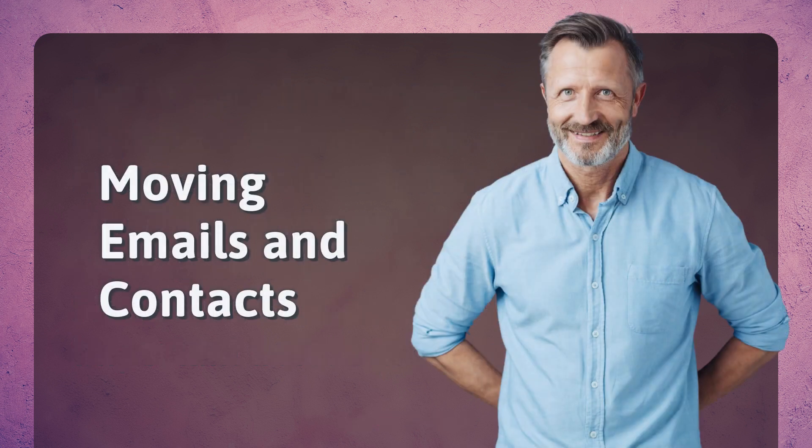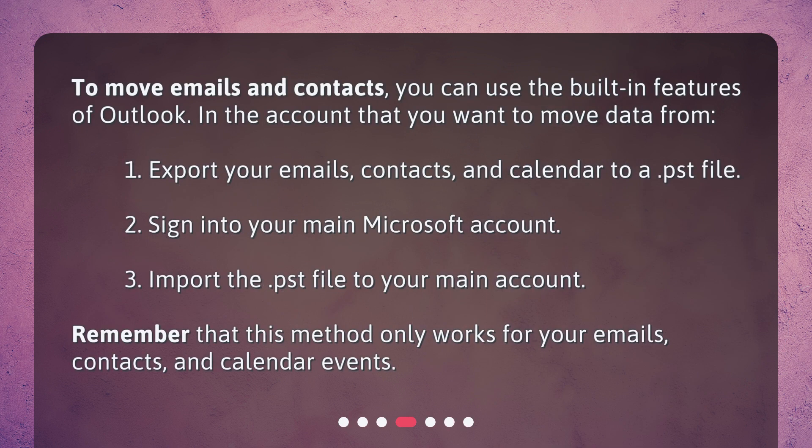Moving Emails and Contacts. To move emails and contacts, you can use the built-in features of Outlook. In the account that you want to move data from: 1. Export your emails, contacts, and calendar to a .pst file. 2. Sign into your main Microsoft account. 3. Import the .pst file to your main account. Remember that this method only works for your emails, contacts, and calendar events.